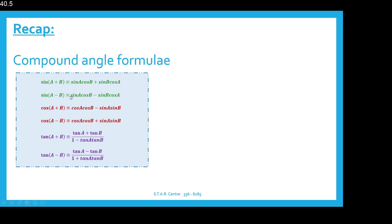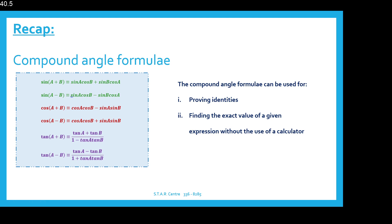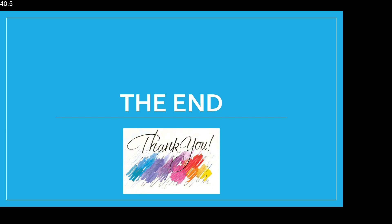To recap: for the compound angle formulae we have three pairs — two for sin, two for cos, two for tan — dealing with two angles being added or subtracted. These formulas can be used for proving trig identities and for finding exact values of expressions without a calculator using special angles in surd form. Our next tutorial will focus on double angle formulae. Thank you for watching — feel free to contact me if you have any questions, and an assignment will be posted shortly.